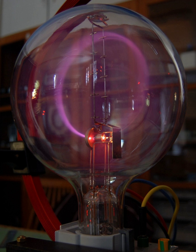Cathode rays are so named because they are emitted by the negative electrode, or cathode, in a vacuum tube. To release electrons into the tube, they first must be detached from the atoms of the cathode.